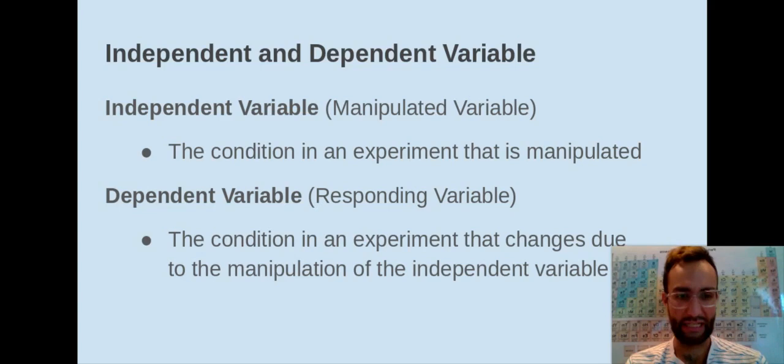The dependent variable is otherwise known as the responding variable. It's the condition in an experiment that changes due to the manipulation of the independent variable. It's what's responding as a result of the change that the researcher is doing in the experiment.